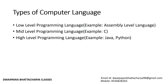There are basically three types of computer languages. One is low-level programming language, which is assembly level language — this is beyond our scope and is used for microprocessors. The second is mid-level programming language, such as C and C++. The third is high-level programming language, such as Java and Python.